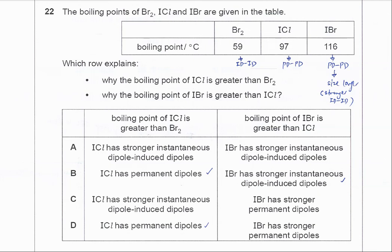So in this question, three boiling points are given: boiling points of bromine, ICl, and IBr. Which rule explains why the boiling point of ICl is greater than bromine? So why is this one 97 and bromine is 59? Why is this one higher?